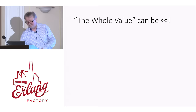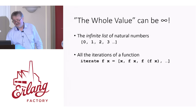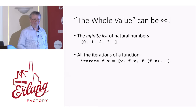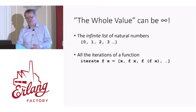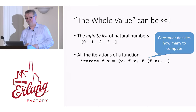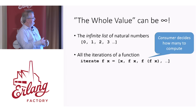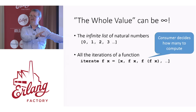For example, you could have the infinite list of natural numbers 0, 1, 2, 3, and so on. You can have the list of all the iterations of a function: x, f of x, f applied twice to x, and so on. The key thing is that you can manipulate these infinite things in your program, but you will never actually compute all of the elements. It's the consumer of this data structure that decides how many elements you're going to compute. And I saw this and thought: this lets you separate the code that defines what you want to compute from the code that defines how much you want to compute.